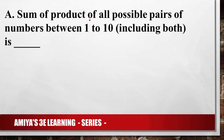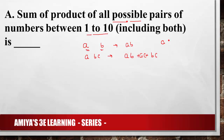First, solve question A: sum of product of all possible pairs of numbers between 1 to 10. What do we mean by possible pairs? If we have two numbers A and B, the possible pair is just A·B. If we have A, B, C, the possible pairs are A·B, A·C, and B·C. If we have four numbers A, B, C, D, the pairs are A·B, A·C, A·D, B·C, B·D, and C·D — these are all possible pairs, consecutive or not.